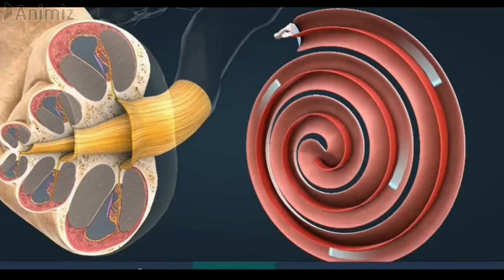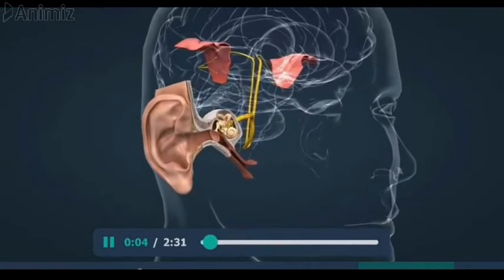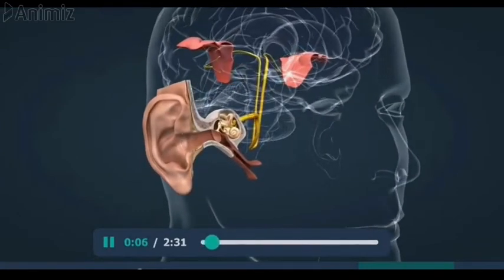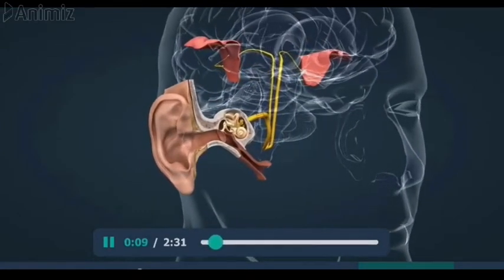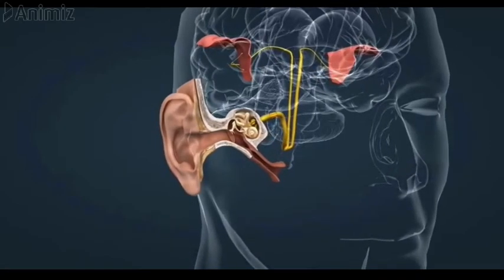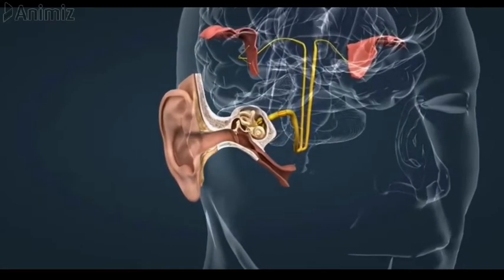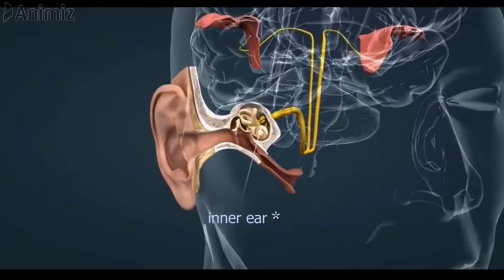The eardrum is so sensitive to sound vibrations in the ear canal that it can detect even the faintest sound, as well as replicating even the most complex of sound vibration patterns. The eardrum vibrations caused by sound waves move the chain of tiny bones — the ossicles: malleus, incus and stapes — in the middle ear, transferring the sound vibrations into the cochlea of the inner ear.